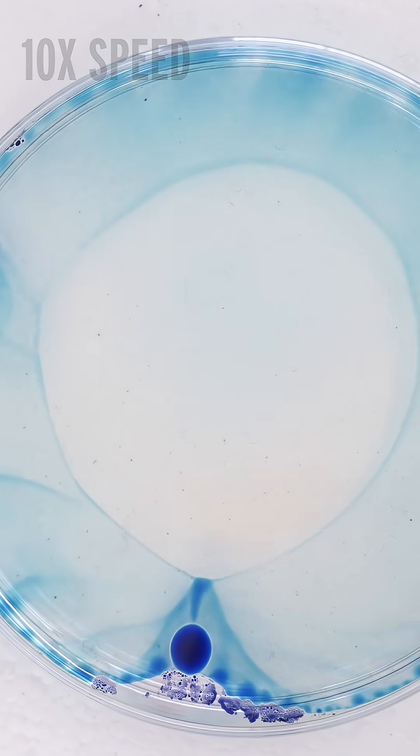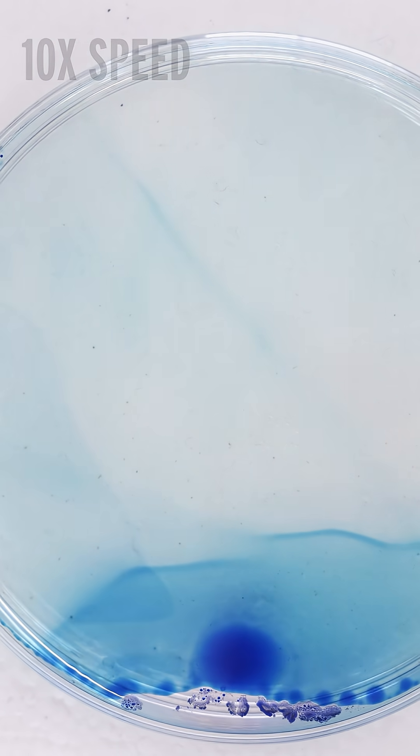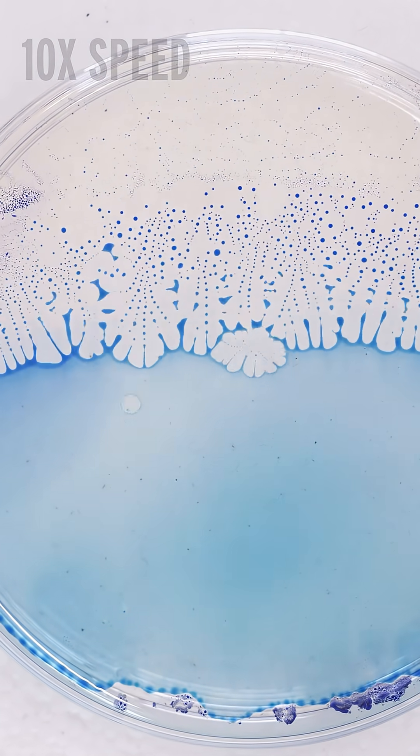Then, as the alcohol begins to evaporate, you get these beautiful droplets and shapes that form as the dye clusters together. This is the Marangoni effect. It's caused by a surface tension gradient.